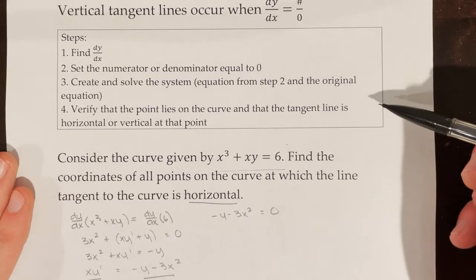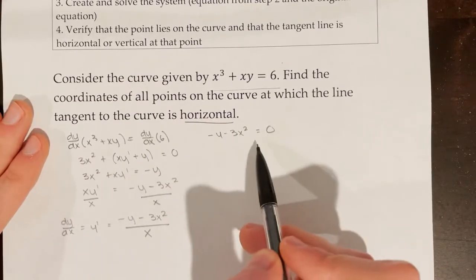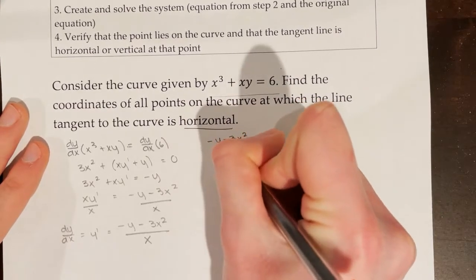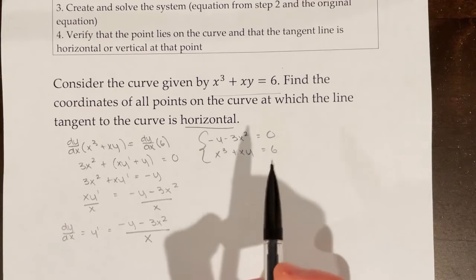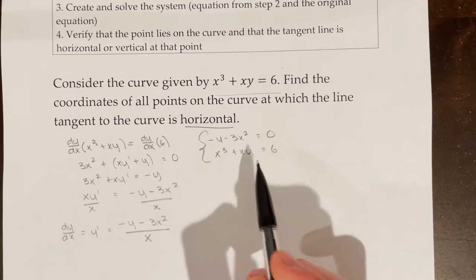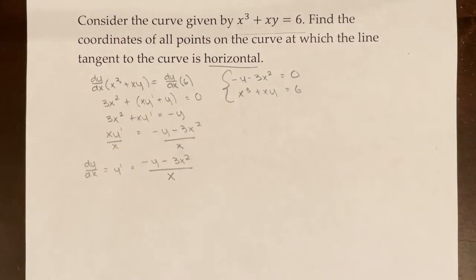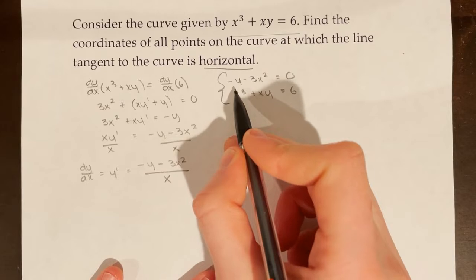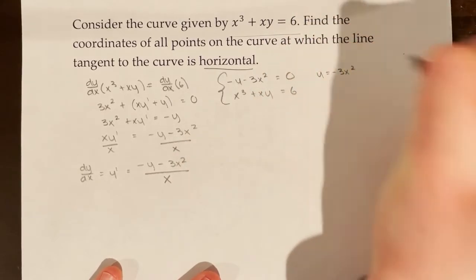My third step is to create a system of equations. One equation is from step 2, and the other is my original equation: x³ + xy = 6. I'll use substitution to solve this system, as the solution gives me the points where the tangent line is horizontal.